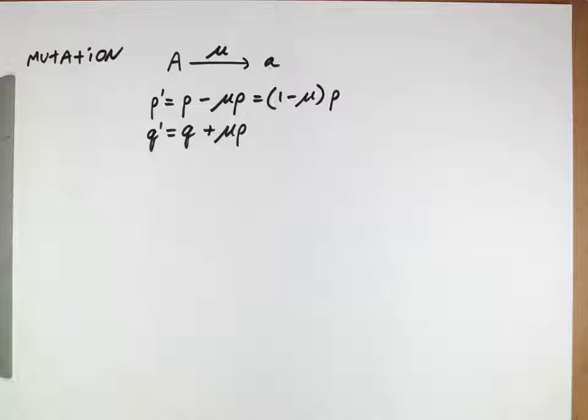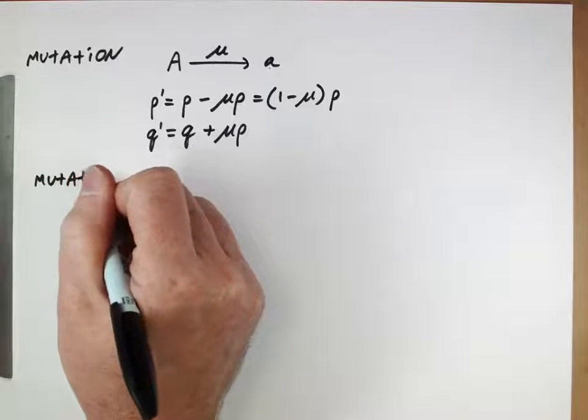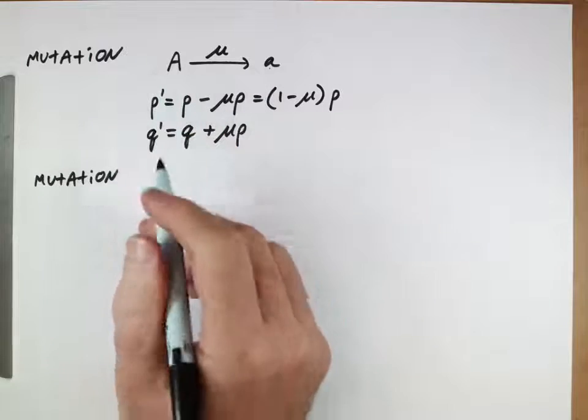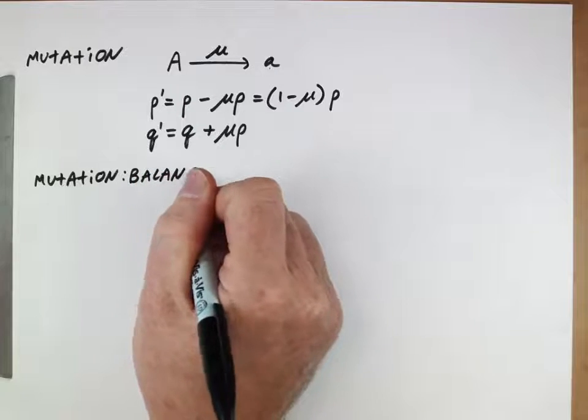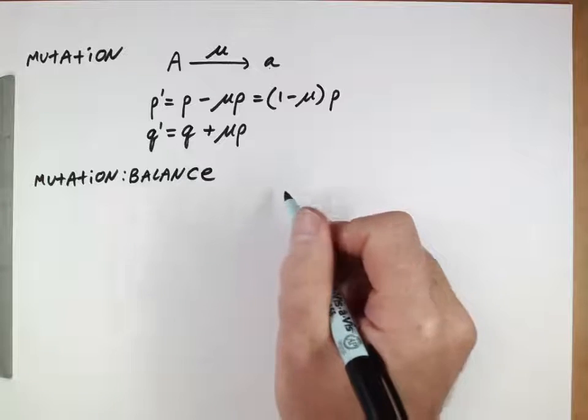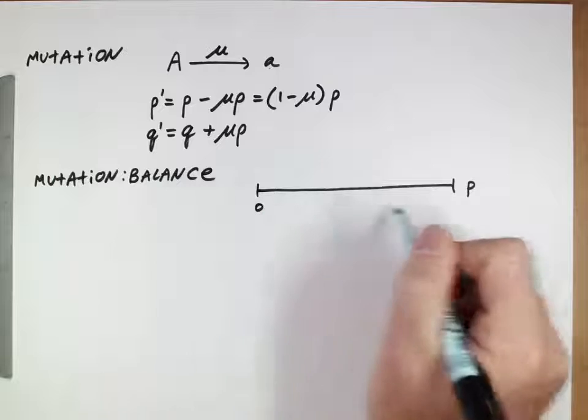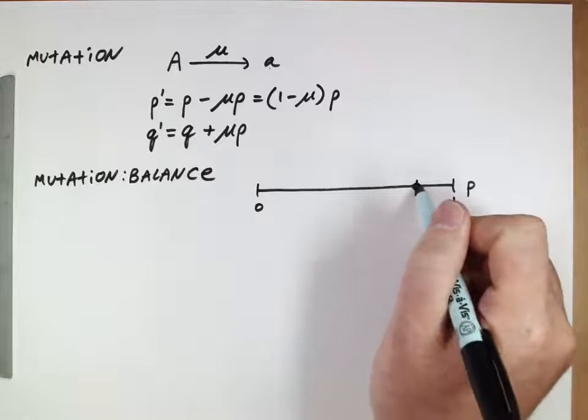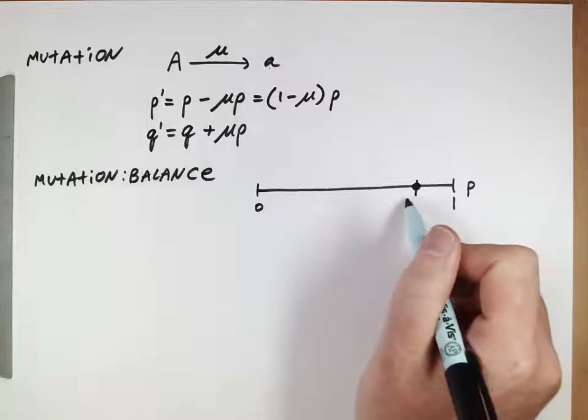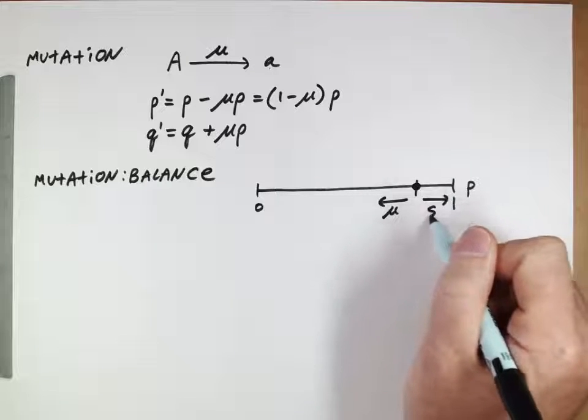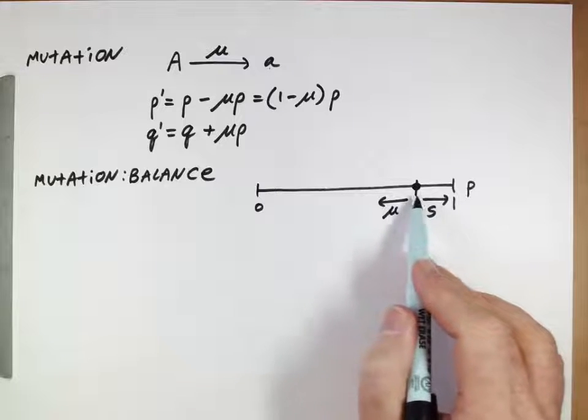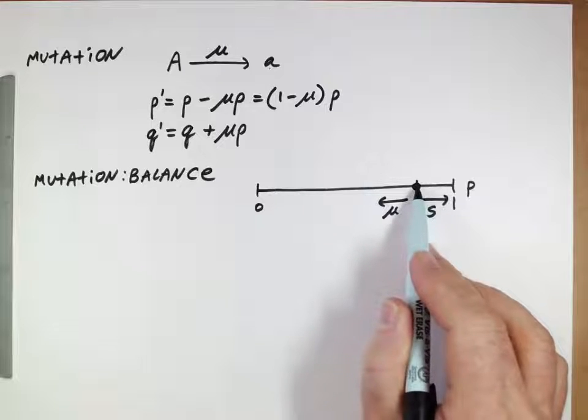So because when we think about these as being advantageous and these being deleterious, there are much more mutations that go to the right, we typically neglect the reverse mutation process. So the derivations we're about to do are typically when we're thinking about going from advantageous to deleterious mutations, and the mutations are going to take advantageous alleles and change them into deleterious ones. But then selection is going to be selecting against those and favoring them. So usually what we're interested in thinking about when we think about mutation is mutation-selection balance.